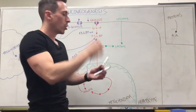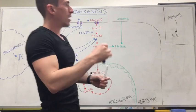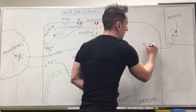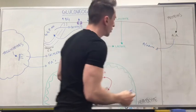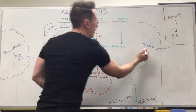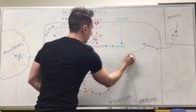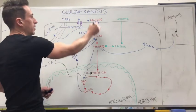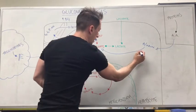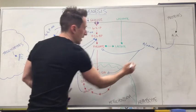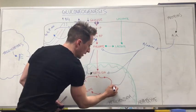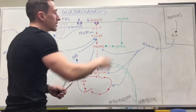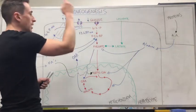What about proteins? Amino acids such as alanine and glutamate can jump into this pathway at different phases — they can enter at various points along the glycolytic pathway. So proteins and amino acids can ultimately turn into glucose as well.